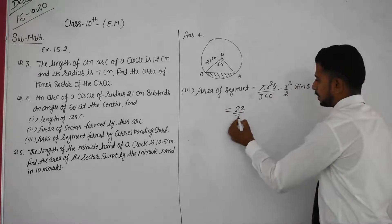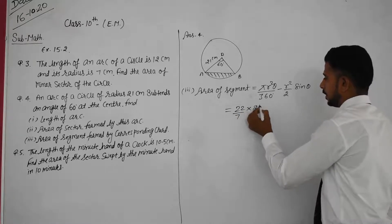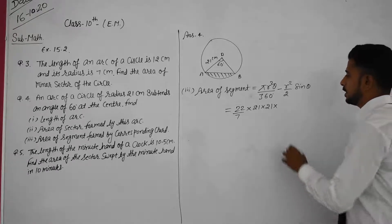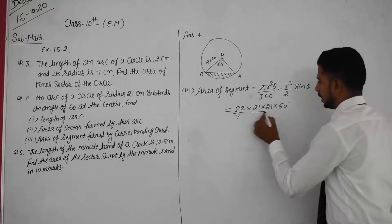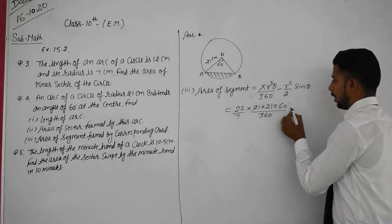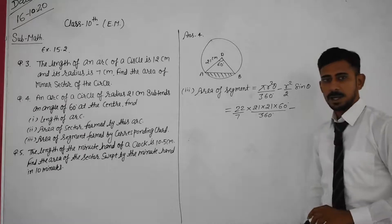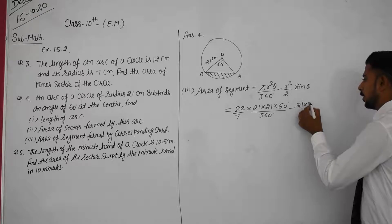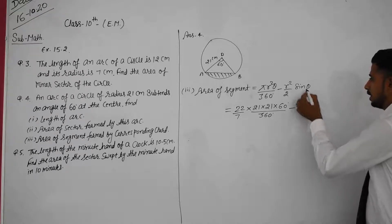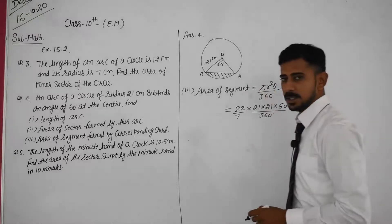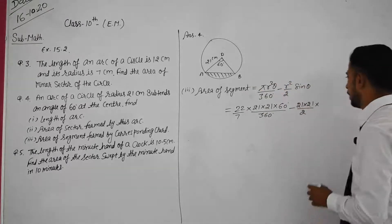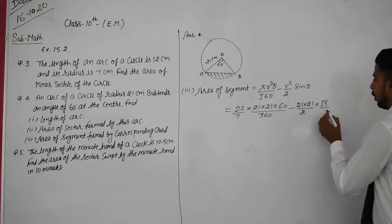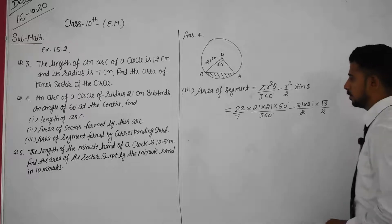Area of segment equals (22/7) into 21 into 21 into 60/360, minus 21 into 21 upon 2 into sin 60°. The value of sin 60° is root 3 upon 2 (you can see this in chapter number 6).